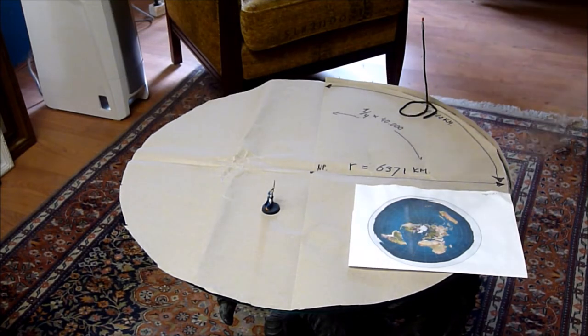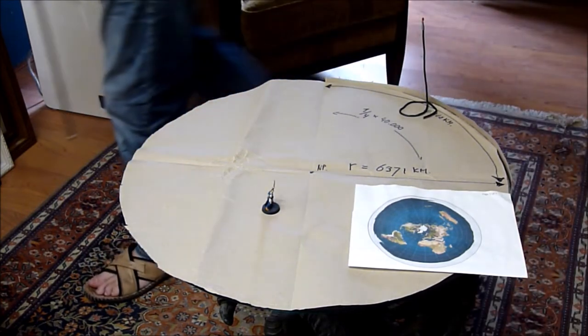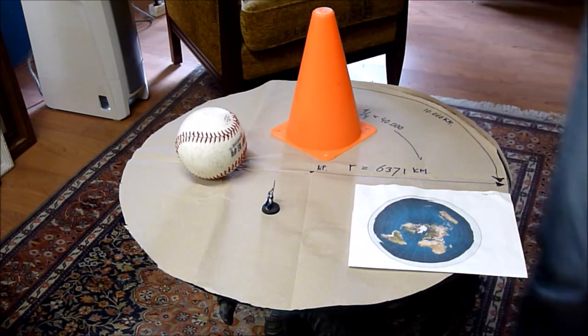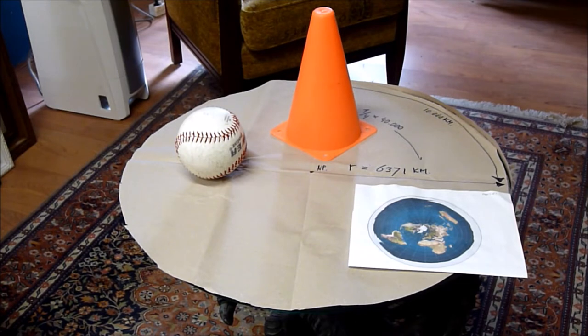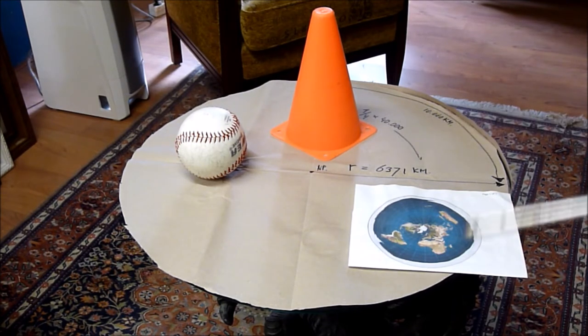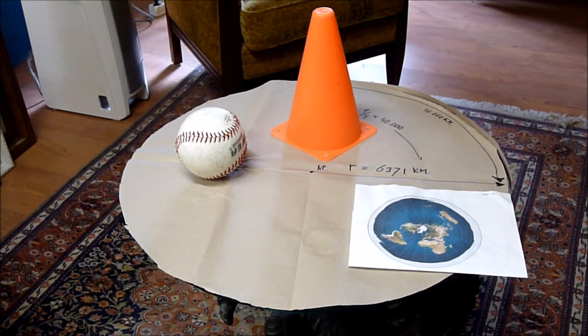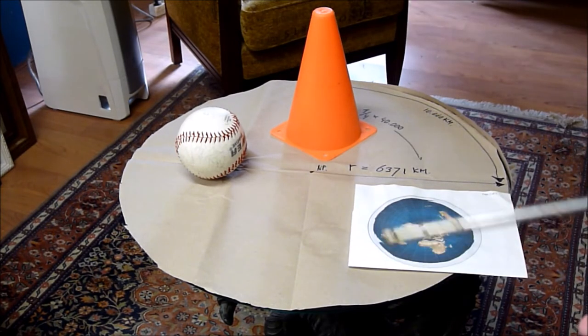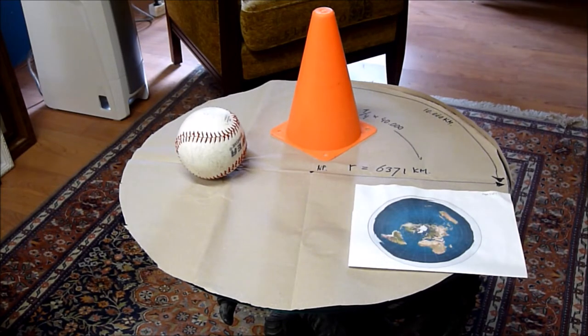Ik denk dat het meeste mensen die fout maken, je kijkt wel naar tekeningetjes. Dus als je het er ruimtelijk voor probeert te stellen, dan is dit er overduidelijk. Maar daar ging ik eigenlijk niet over hebben, want ik wil het over de vorm zelf hebben. De vorm is veel meer belangrijk dan alle schijnfenomenen die wij menen te zien. Dus het breken van licht, wel of niet over een curve kunnen kijken, is eigenlijk allemaal secundair.